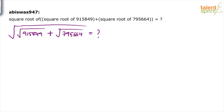Because options are not given here, we have to do the complete solution. There are 3 steps: first, find the square root of 915849; then find the square root of 795664; then add these two terms and find the square root of whatever result you get.